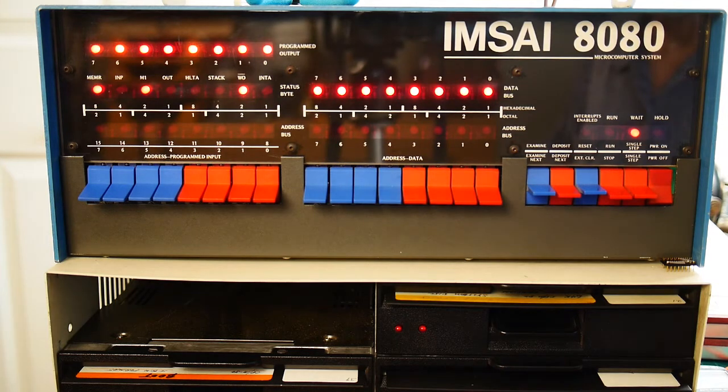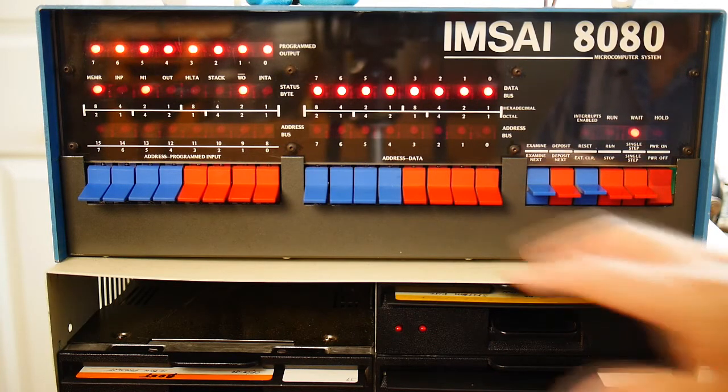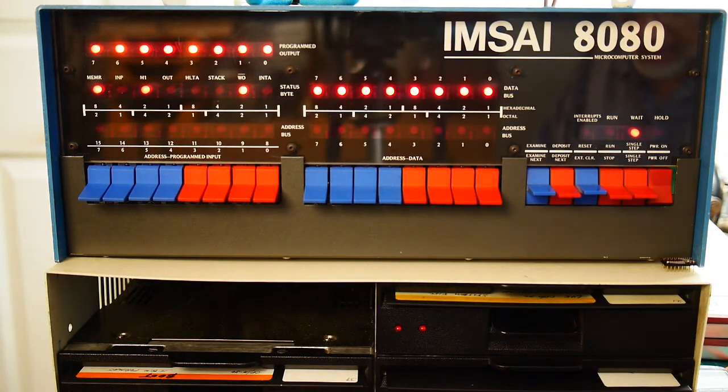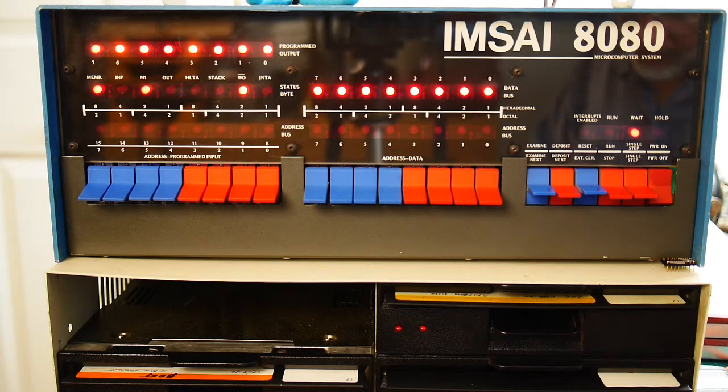So we need some type of delay routine. And we're going to use a register and count down a register for the delay. We're going to be incrementing the A register and displaying that. So we're going to use the B register for our countdown. So we're going to decrement the B register.